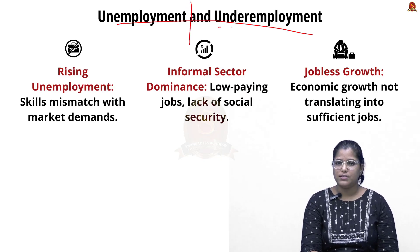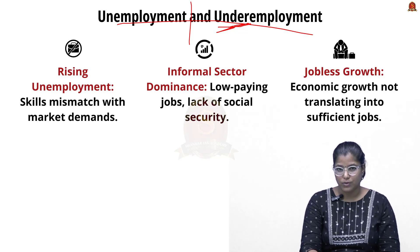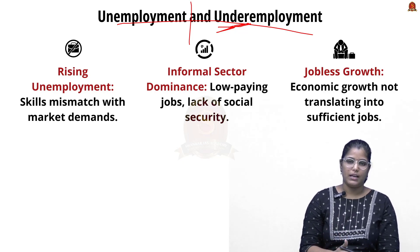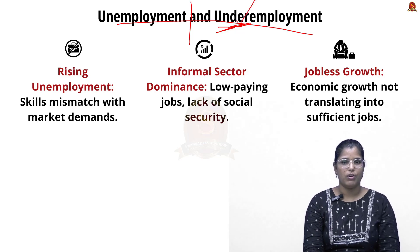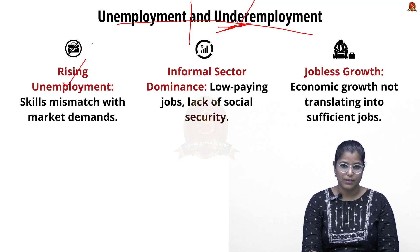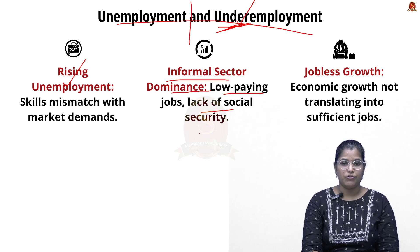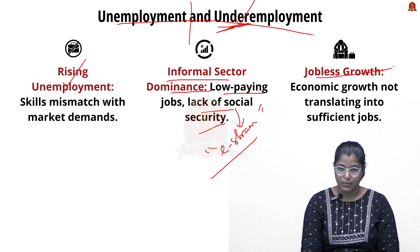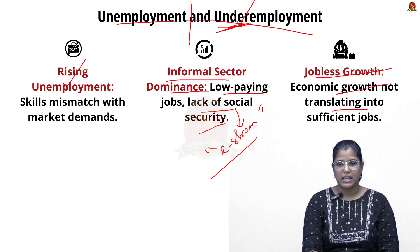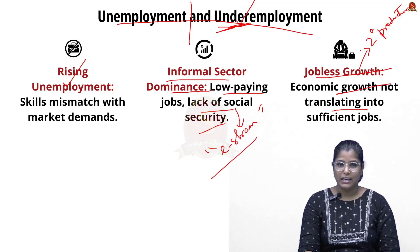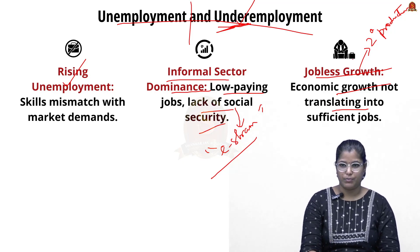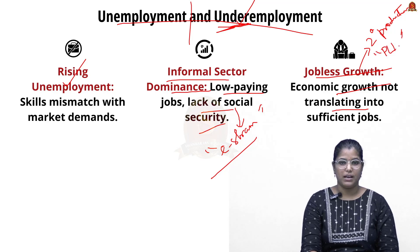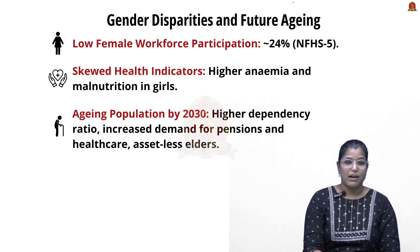On unemployment and underemployment: underemployment means being employed below one's actual potential — having higher capability but working in a lower-grade role. India faces rising unemployment as well as underemployment, with informal sector dominance offering very low pay and lacking social security (the e-Shram portal is relevant here). There is also jobless growth — where economic growth does not translate into sufficient jobs — mainly because India, while a hub of IT outsourcing, lags in manufacturing. The government's PLI scheme needs proper implementation to address this.